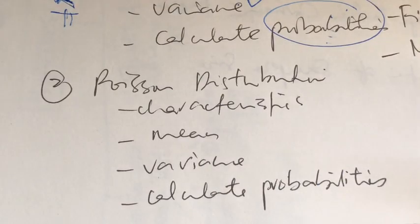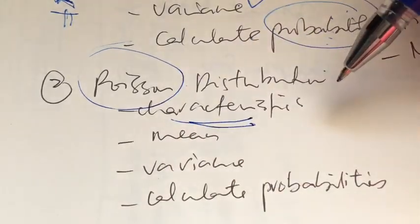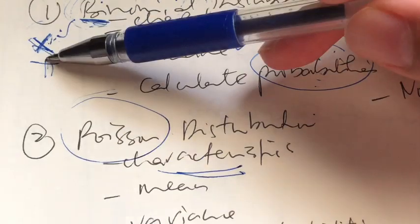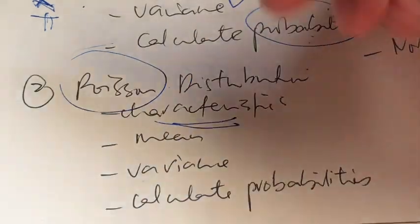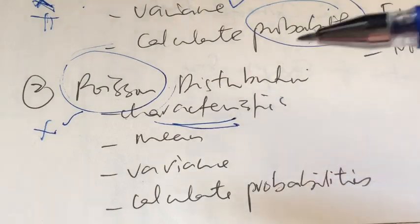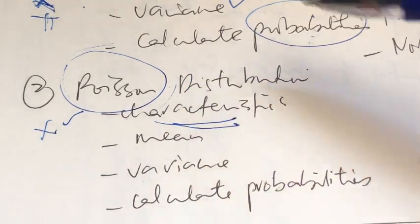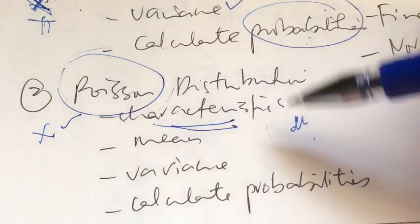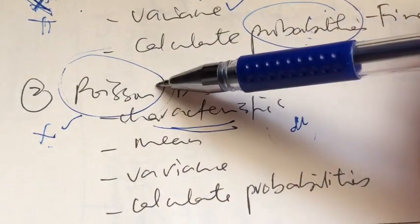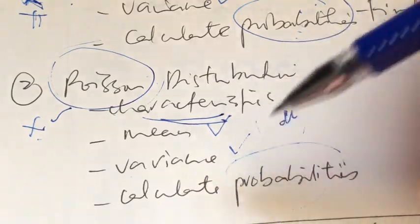The second special type of discrete probability distribution is the Poisson distribution. Just like binomial, it has special characteristics. While the binomial distribution focuses on the number of successes, Poisson focuses on the number of occurrences. The key difference is that Poisson involves intervals — per day, per minute, per match, etc. For every random variable following the Poisson distribution, we identify the rate at which something occurs within that interval; this rate is the mean, mu. We can find the mean, variance, and probabilities — please know the respective formulas.